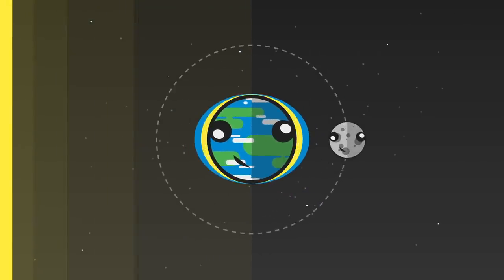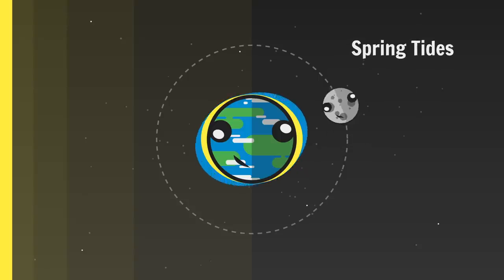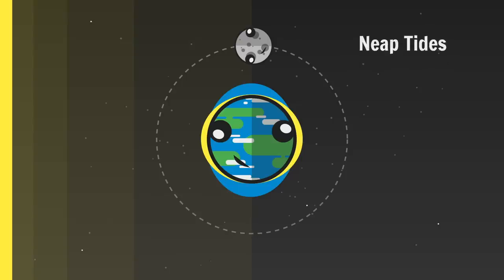Likewise, the Sun also creates tides just weaker. When the Sun and the Moon align, the tidal effect is amplified. We call these extra-large tides spring tides. When they're at 90 degrees to one another, their effects sorta cancel each other out. We call these neap tides.